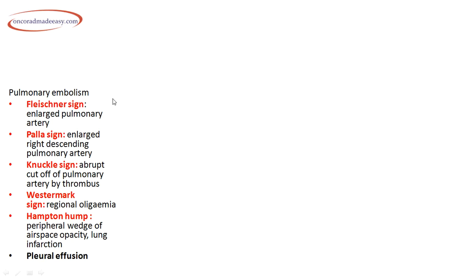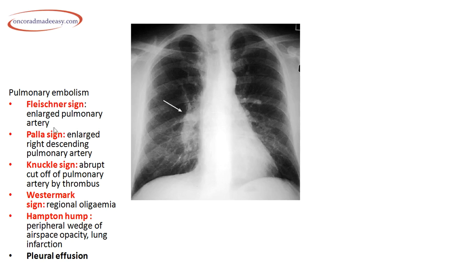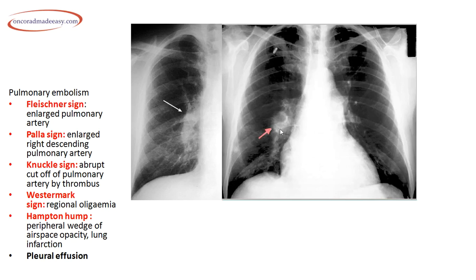A very important, repeatedly asked topic is pulmonary embolism. The signs are: Fleischner's sign — enlarged pulmonary artery due to intraluminal thrombus. If the enlarged vessel is the right descending pulmonary artery, it is called Palsini sign. Knuckle sign is a complete cutoff of the pulmonary artery due to a large intraluminal thrombus obstructing the lumen. Westermark sign is oligemia — decreased bronchovascular markings in the distal lung due to pulmonary artery obstruction.